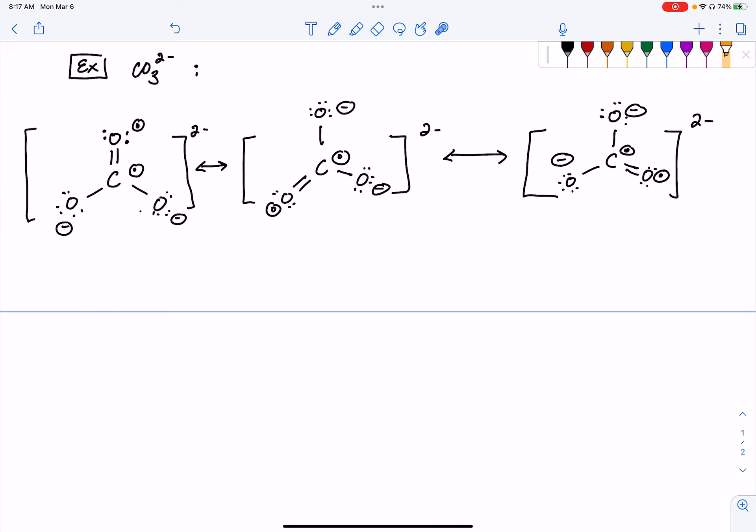If you would like to pause and do those formal charge calculations for yourself, I highly recommend that. And what you find is that, okay, yes, negative 1, negative 1 gives us an overall charge of negative 2, which is correct. This is a negative 2 anion, so we should see the sum of our formal charges adding up to give us the overall charge on our compound, which here is a polyatomic ion. So we should see that negative charge.